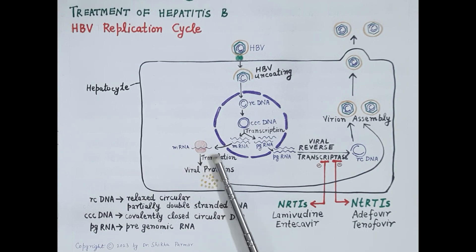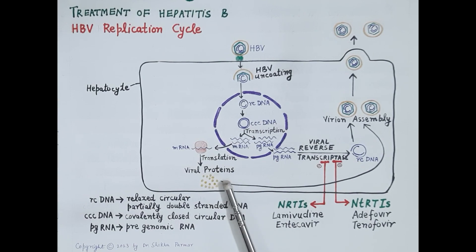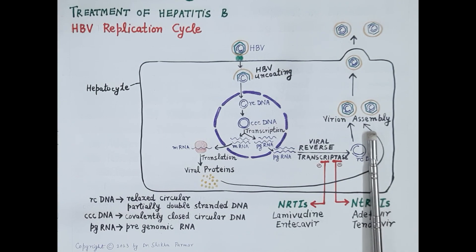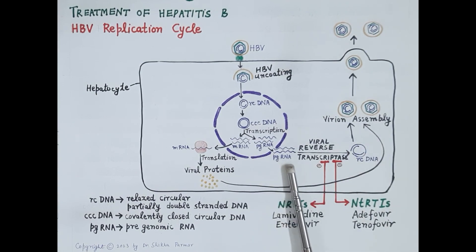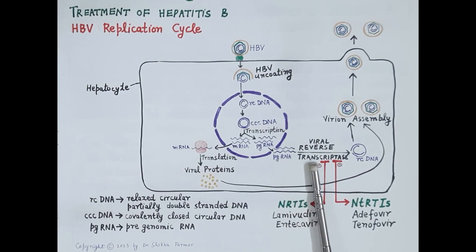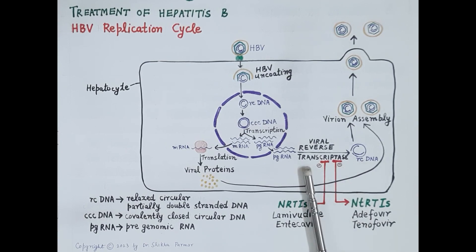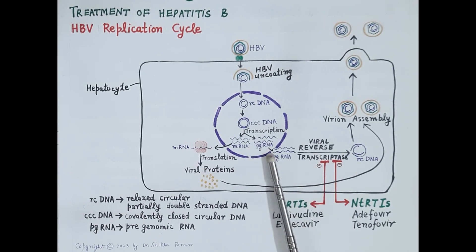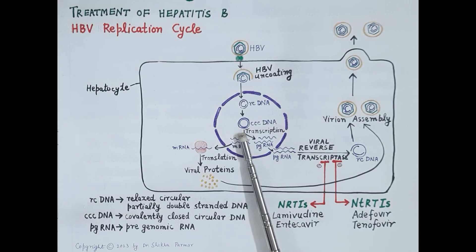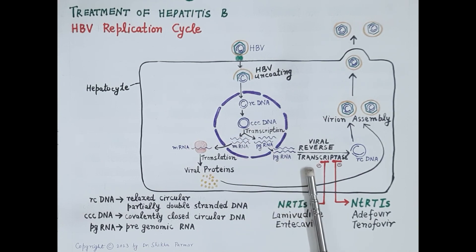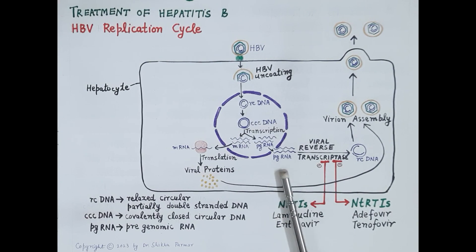This cccDNA is transcribed, producing messenger RNA and pre-genomic RNA. The messenger RNA attaches to the host ribosome and is translated to produce viral structural and functional proteins, which are utilized to produce viral progenies. The viral pre-genomic RNA is reverse transcribed to viral rcDNA by the enzyme reverse transcriptase. Transcription is the process by which RNA is synthesized from DNA, while reverse transcription is the process by which DNA is produced from RNA.